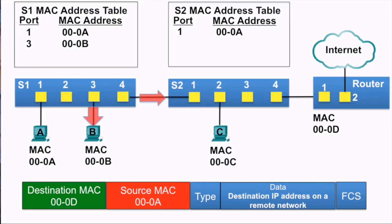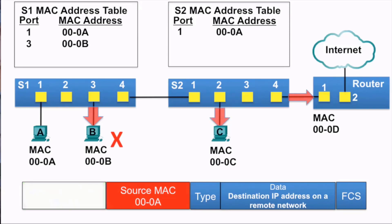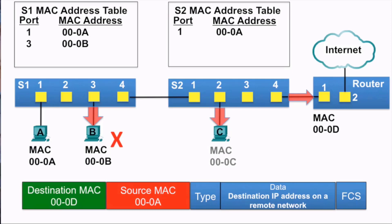PCB receives the Ethernet frame, and because the destination MAC address does not match its own MAC address, it does not accept the rest of the frame. Switch S2 receives the Ethernet frame, examines the source MAC address, which is in its MAC address table, so it also simply refreshes the 5-minute timer. PCC gets the Ethernet frame, and because the destination MAC address does not match its own MAC address, it does not accept the rest of the Ethernet frame.